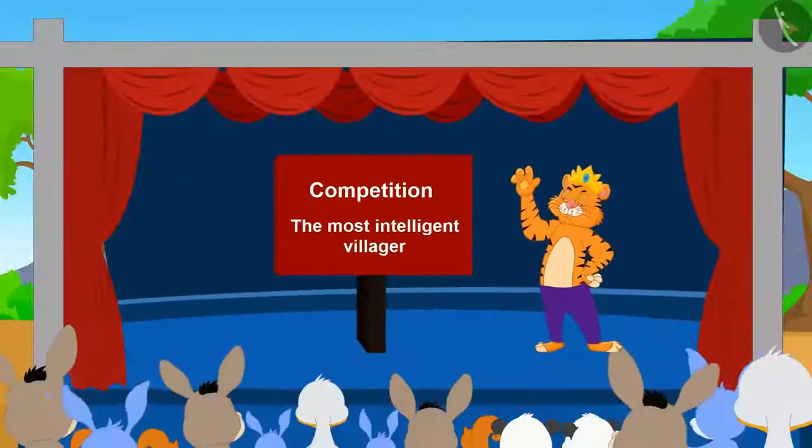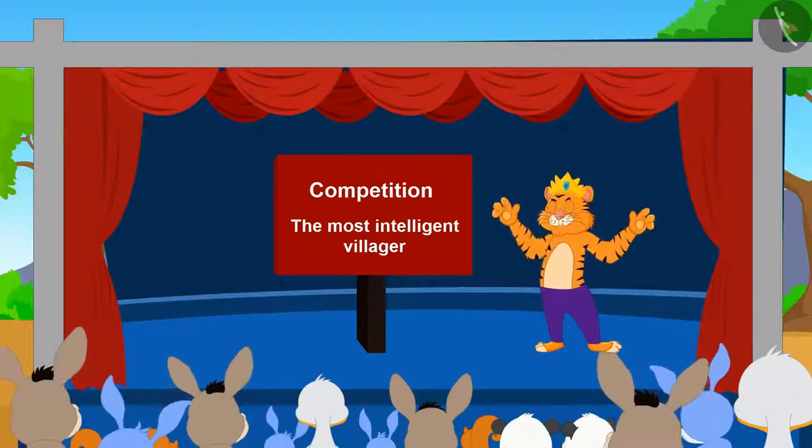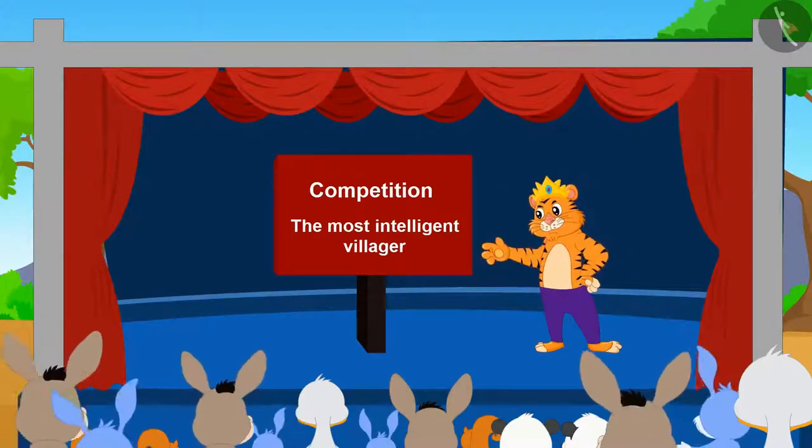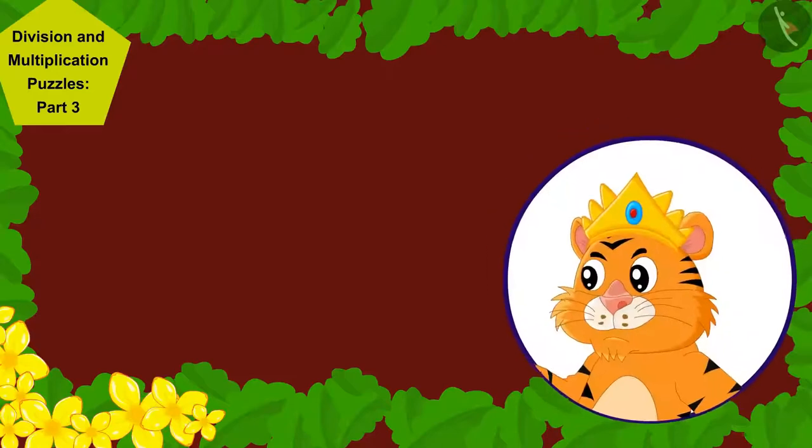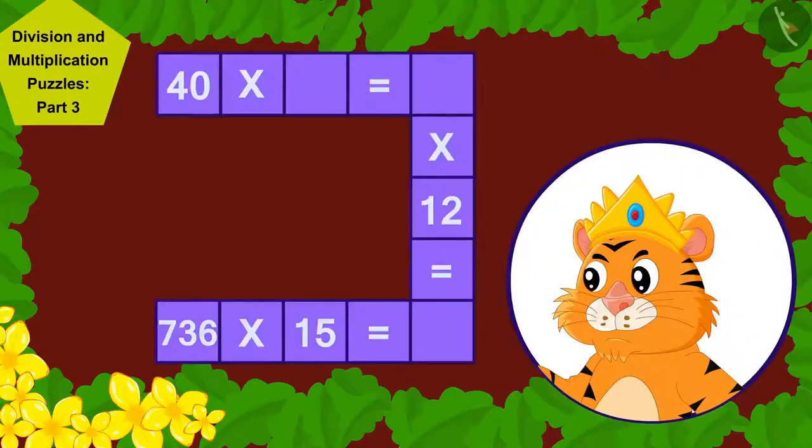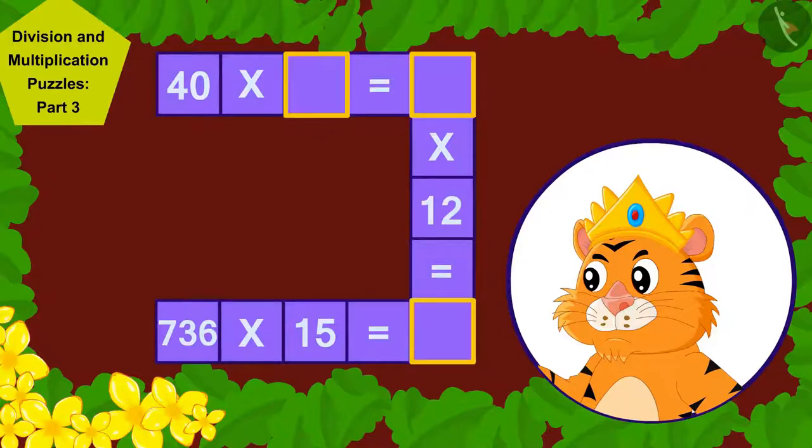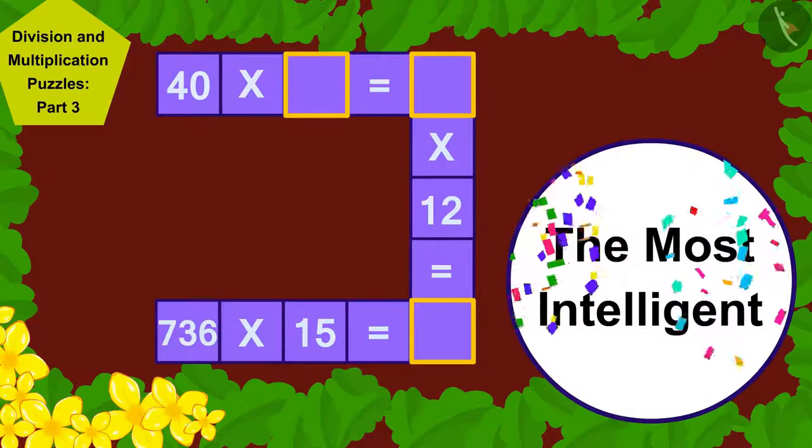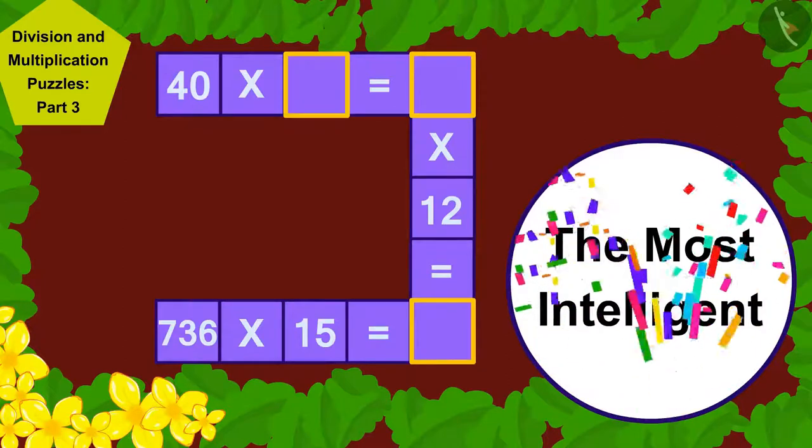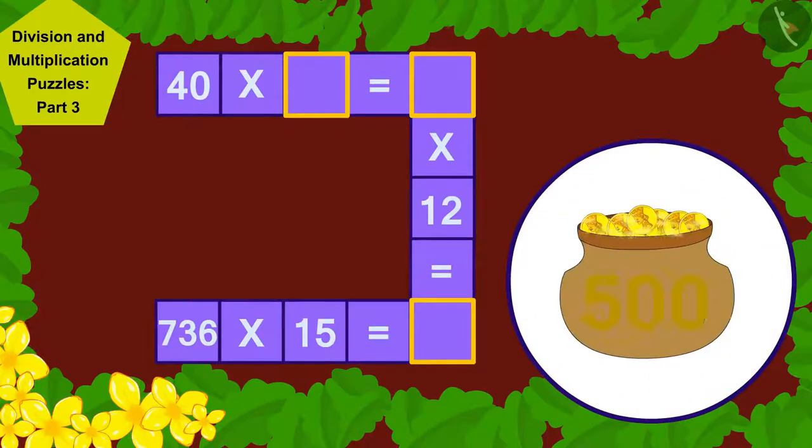Today, the king of Champapur has announced to find the most intelligent villager. He has created this puzzle. Whoever is able to solve this puzzle will be declared the most intelligent villager in Champapur and will be given 500 gold coins as prize.